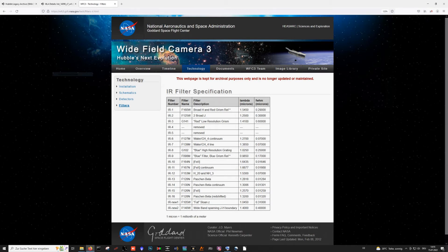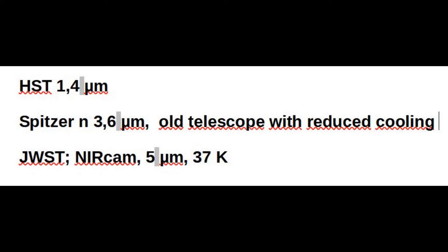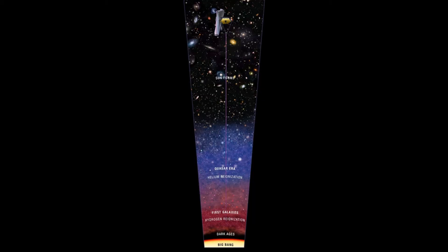Why infrared? For very high redshifts of 6 and higher, characteristic for the farthest objects from us, visible light is generally shifted into the near- and mid-infrared part of the electromagnetic spectrum. For that reason, to see the first stars and galaxies, we need a powerful near- and mid-infrared telescope, which is exactly what Webb is.